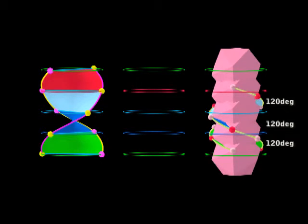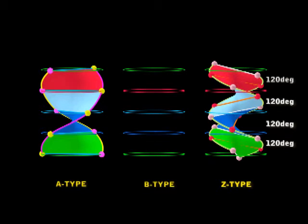So now we have cyan, and finally we have red. Okay, so this now gives us the Z-DNA.